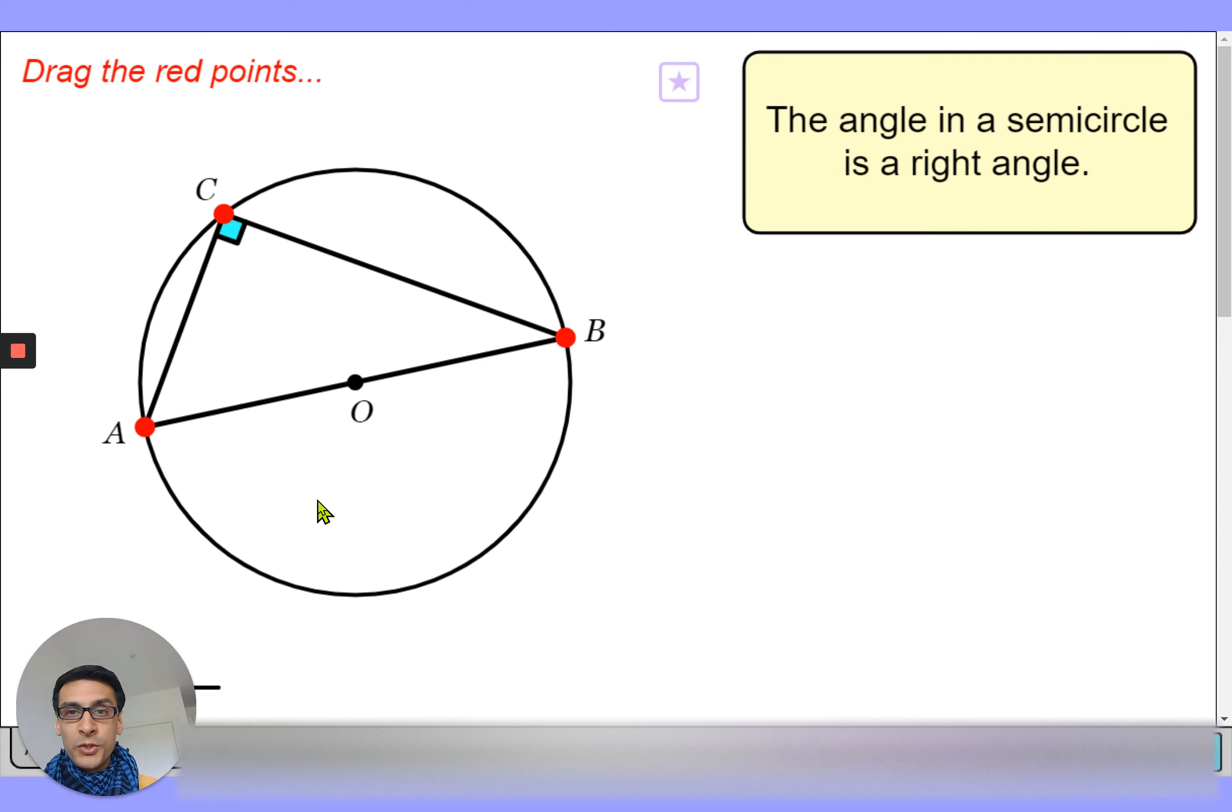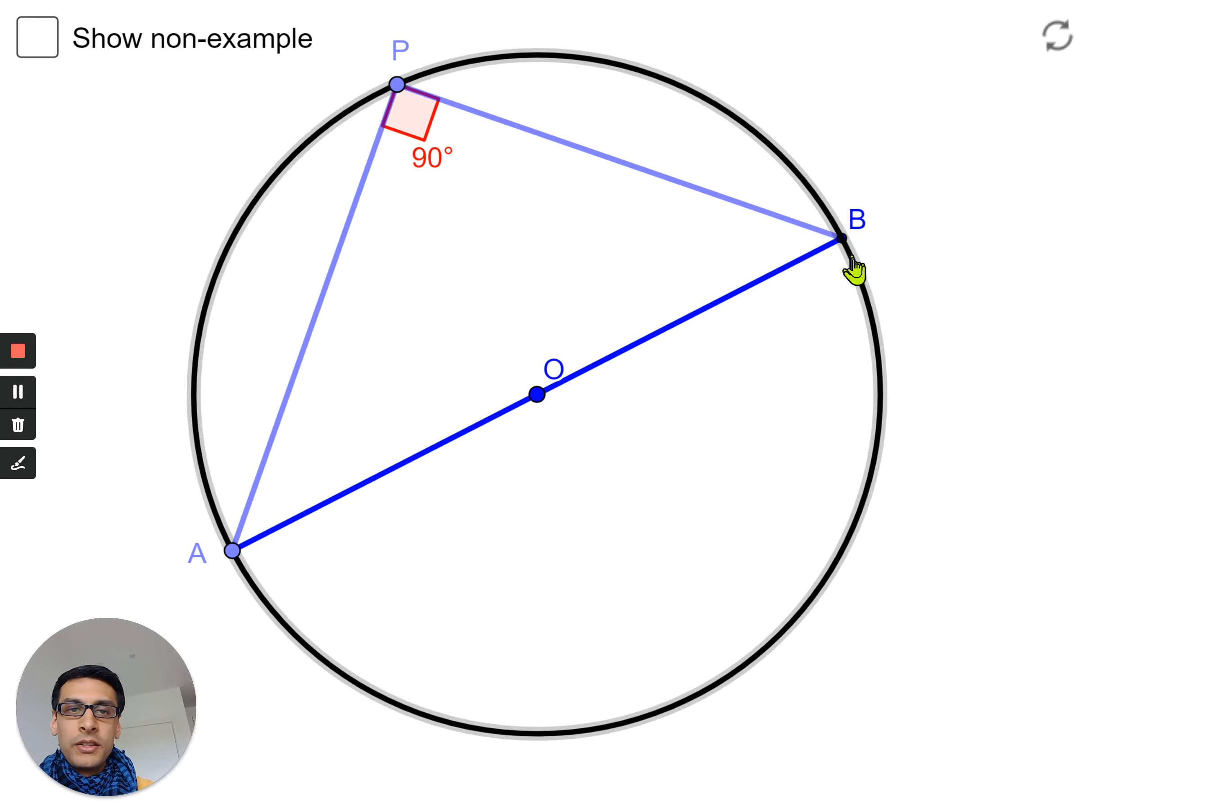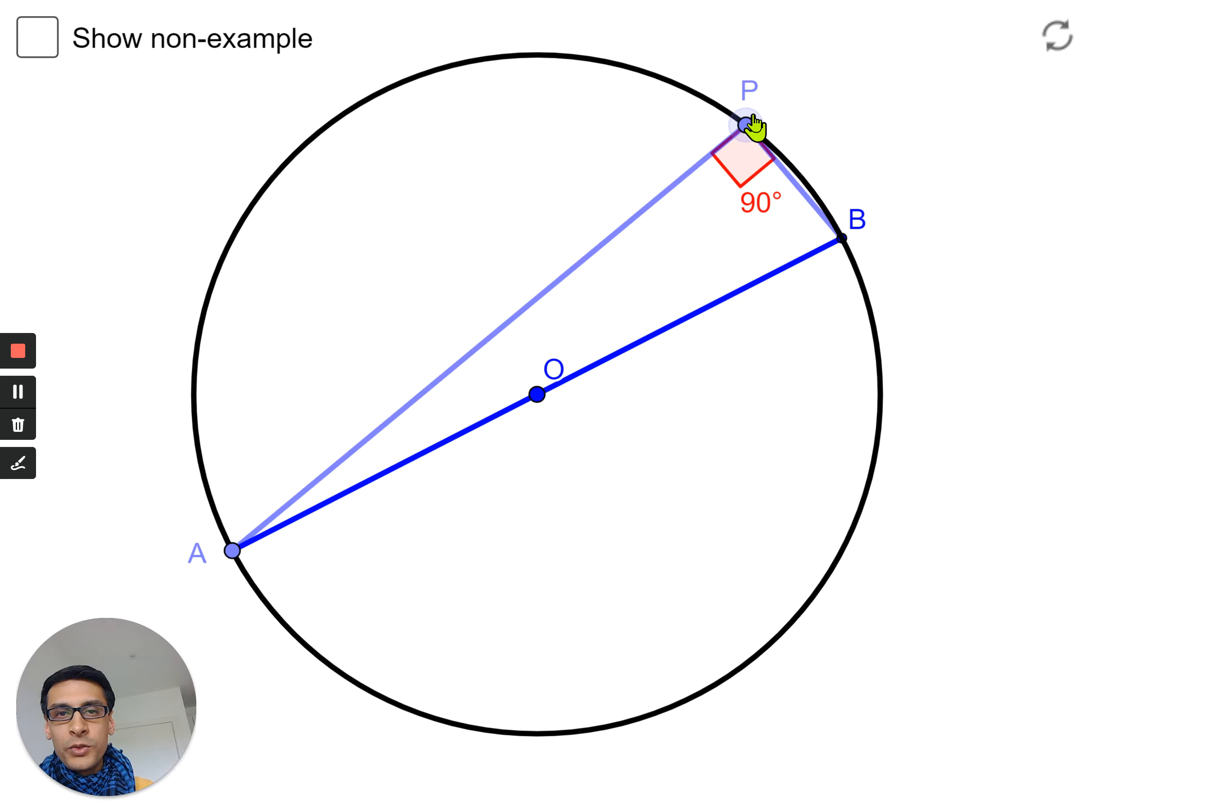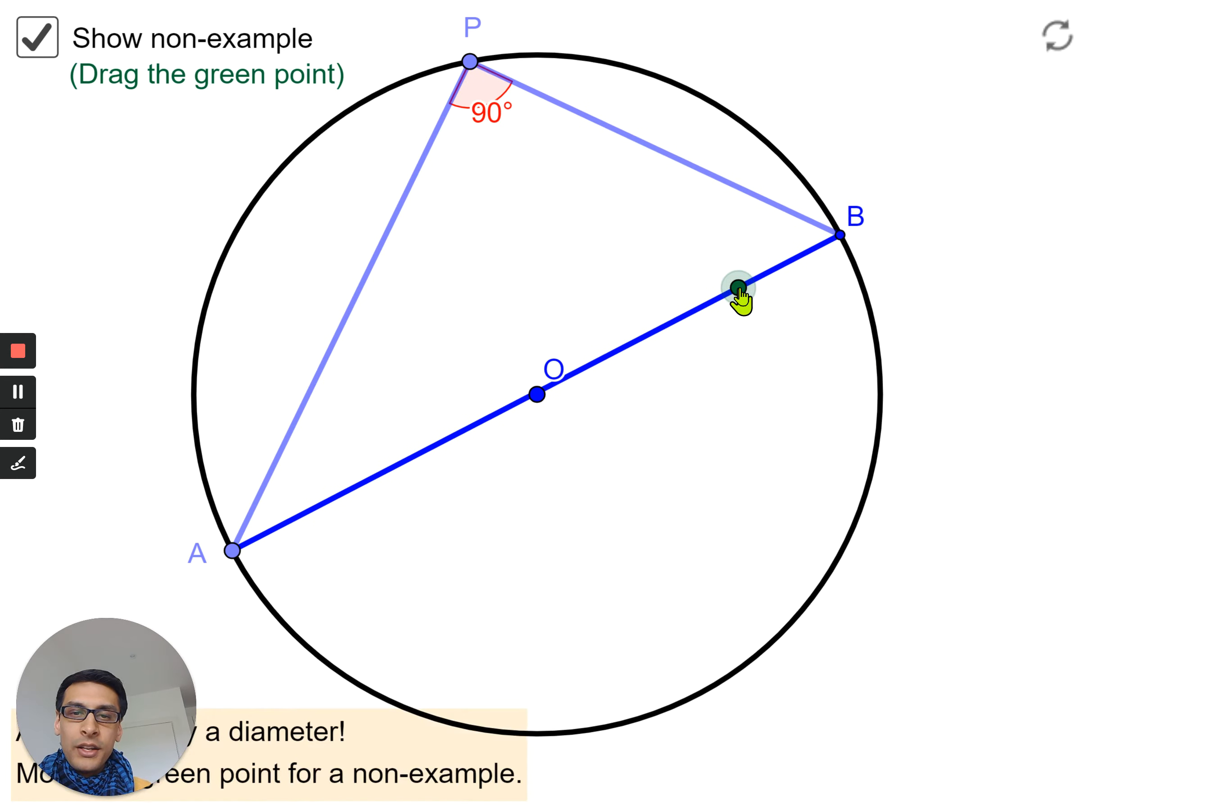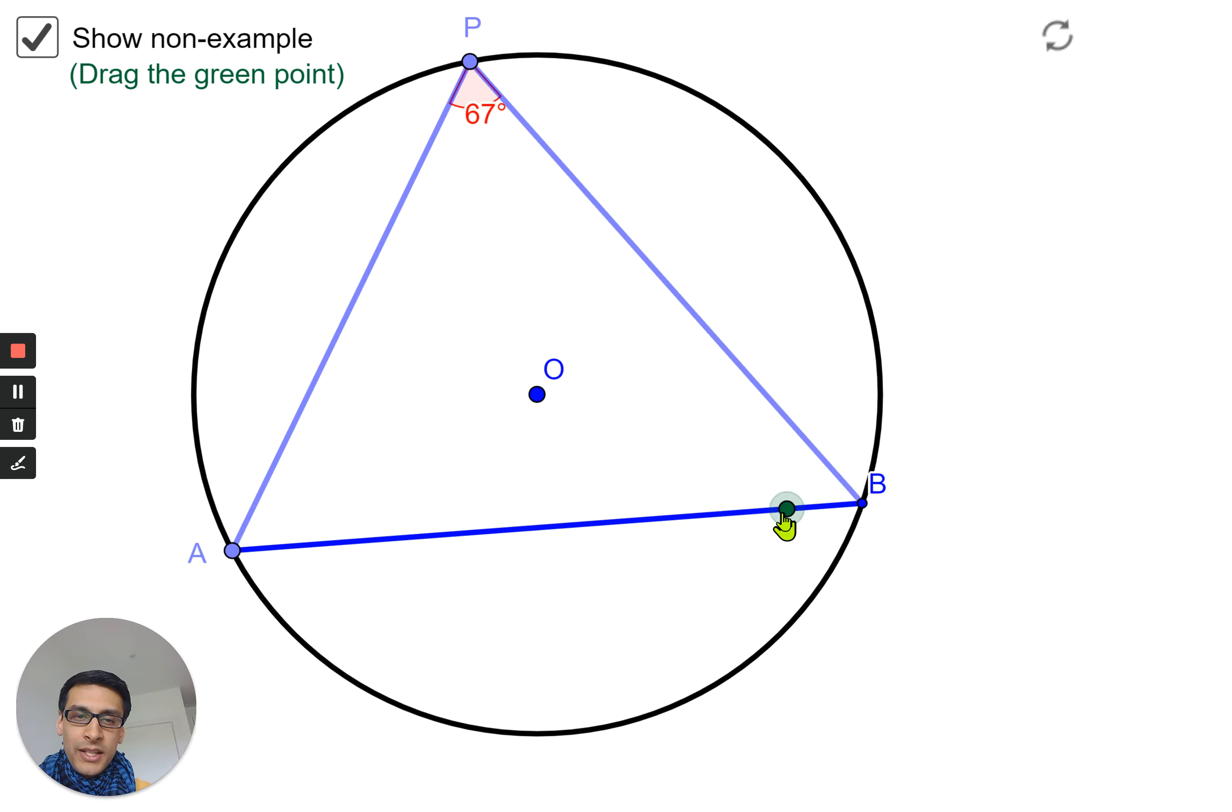So let's look at some examples of this. You can see I can move this point P around and it stays at 90 degrees, and there's certain properties that apply here that I've already mentioned. What happens is if we move this line away from the center, that angle is no longer 90 degrees.